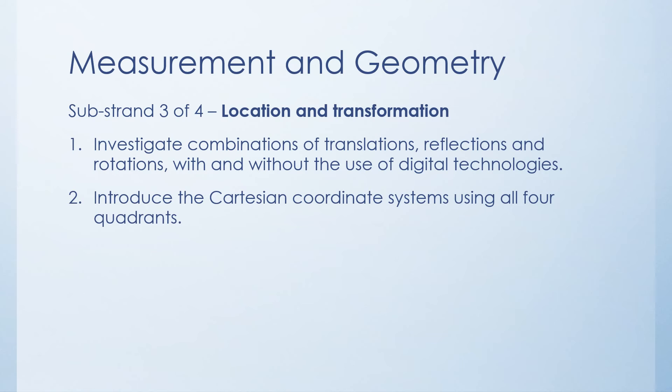And the final content descriptor here is introducing the Cartesian coordinate system using all four quadrants. It's really just putting numbers to the grid. That way it's easier to be able to know what is where. This is just following on from translations and reflections and rotations that you're actually putting labels to where things are.